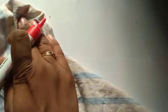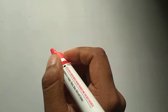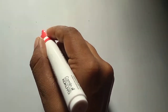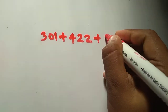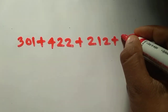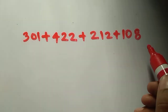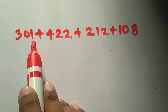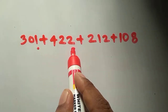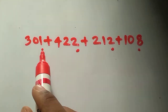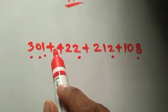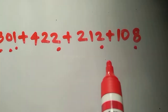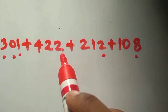Now we will move on to the practical portion where we use these complements. First example: 301 plus 422 plus 212 plus 108. We start by taking the 1's place of all these numbers — the 1's place, the 10's place, and the 100's place.